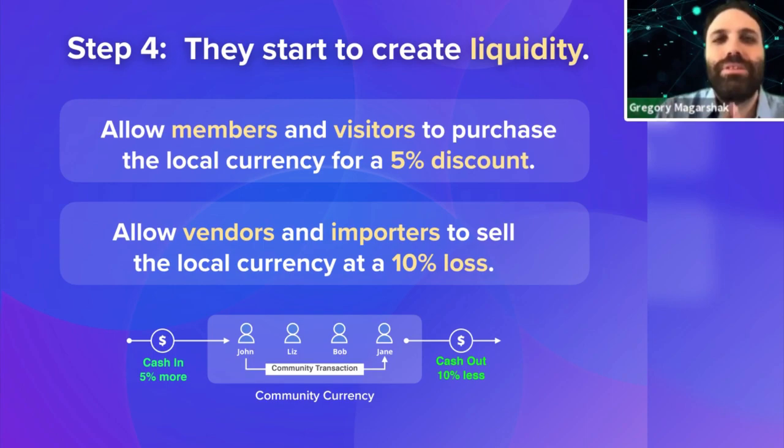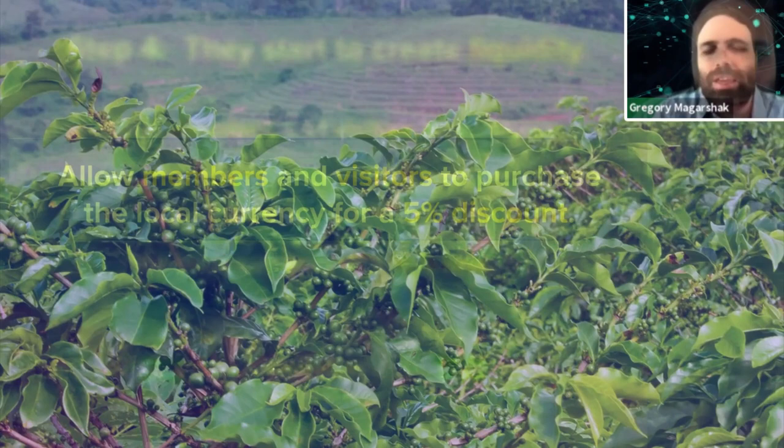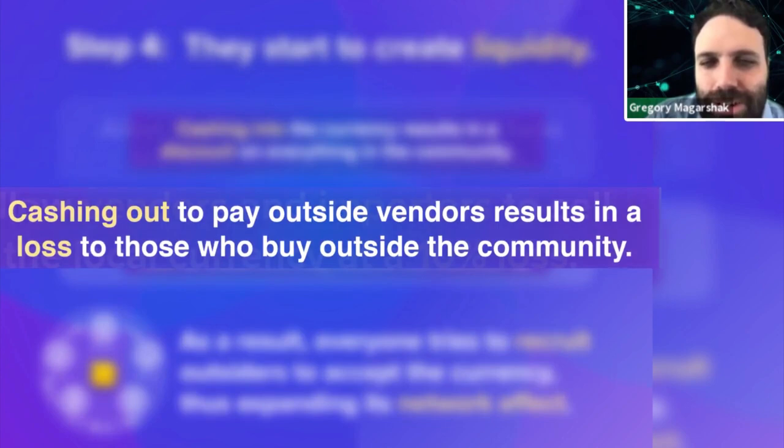Step four. You've been paying people in this currency, but sometimes these people need to actually get outside resources. For example, a coffee shop has to actually import coffee from Colombia or some other country. You allow members and visitors to purchase the local currency at a discount — the idea being that once they get your currency, they have a 5% discount on everything in your community. Cashing out results in a loss, so there's a bit of friction.